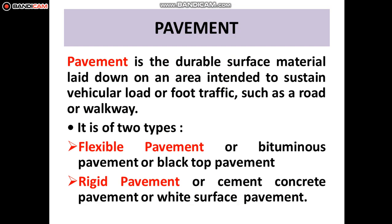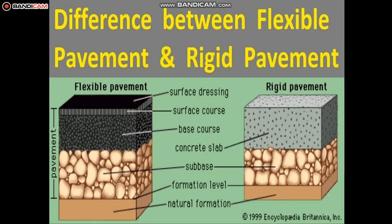There are two types of pavement: flexible pavement and rigid pavement. Flexible pavement is also called bituminous pavement or black top pavement. Rigid pavement is also called cement concrete pavement or white surface pavement. Under flexible pavement, layers start from natural formation, sub-base, base course, surface course, and surface dressing. Rigid pavement has only three layers: natural formation, base course, and concrete slab.